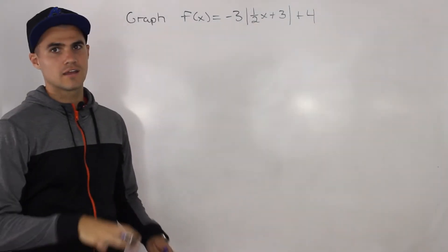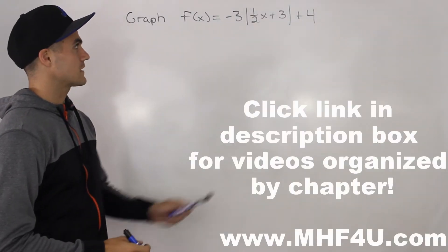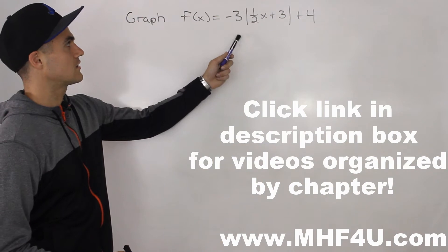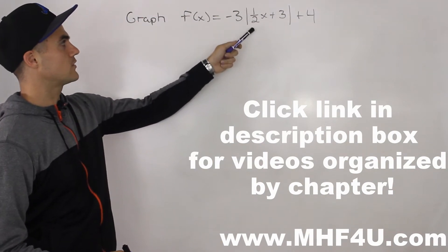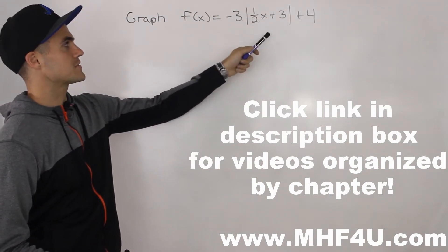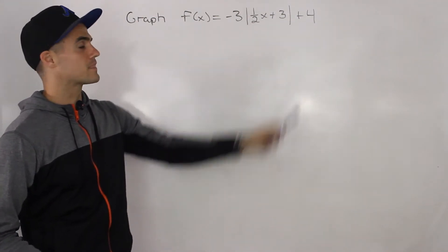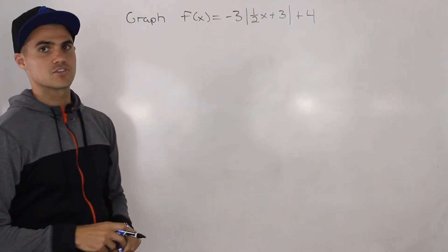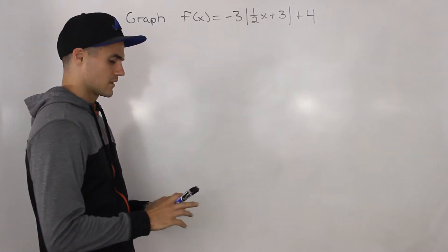Welcome back everybody. In this question, we're going to graph the function negative three absolute value of one half x plus three, plus four, and then state a bunch of properties at the end.